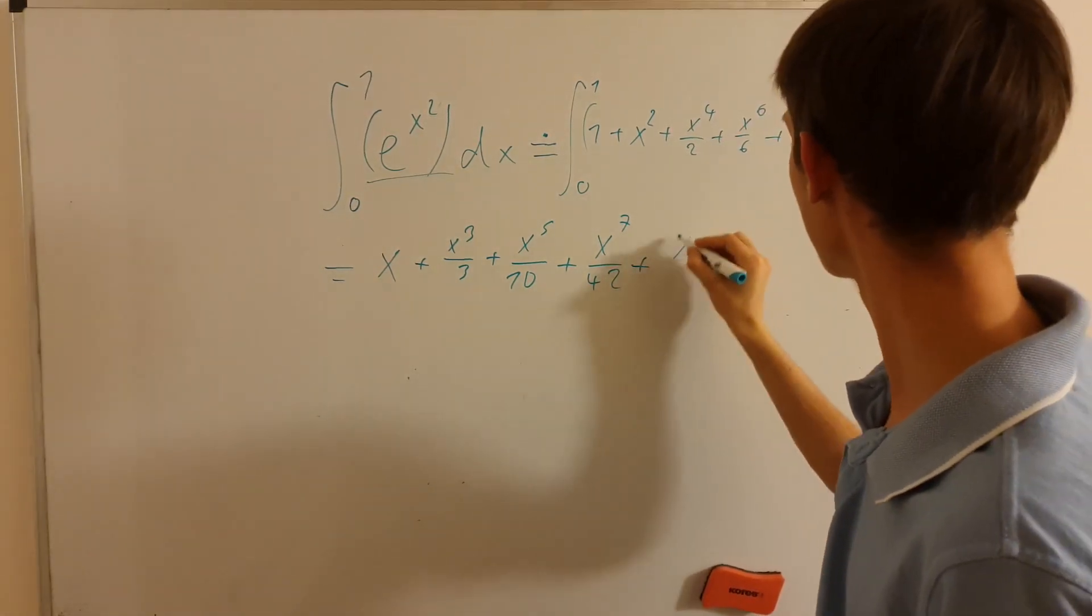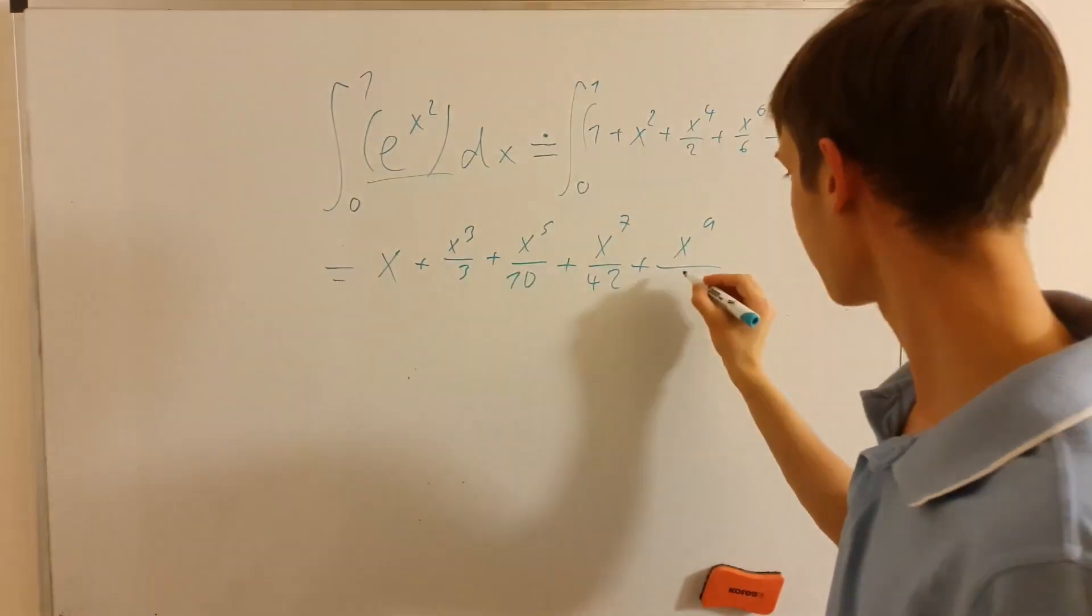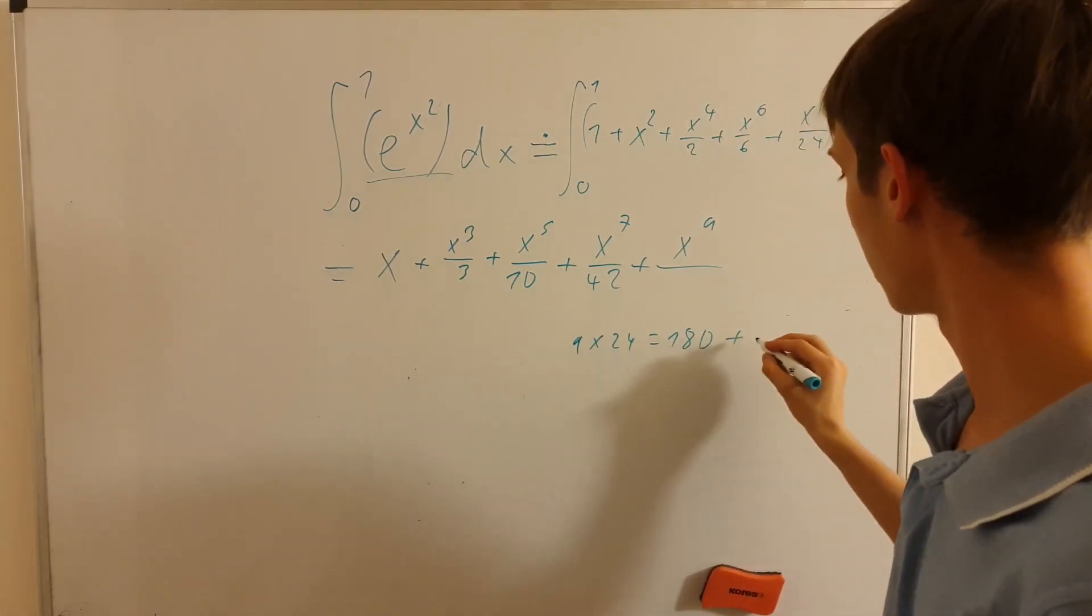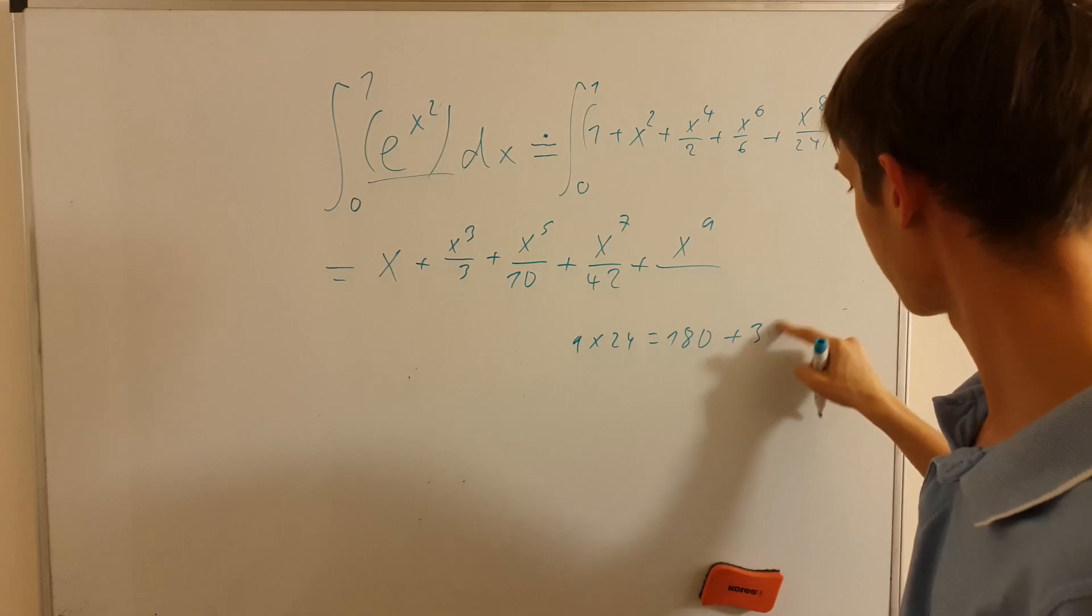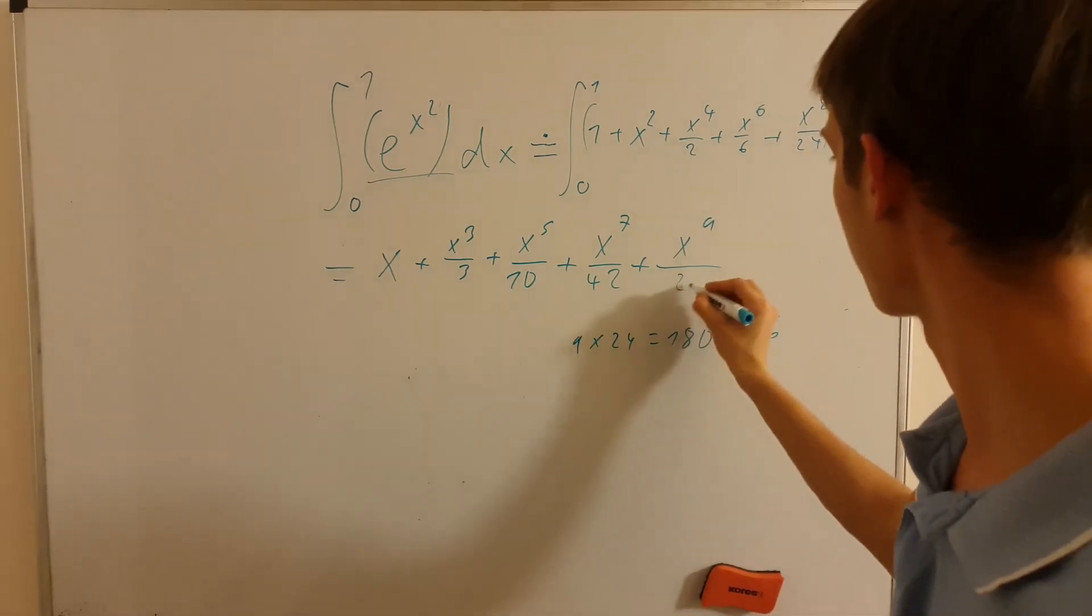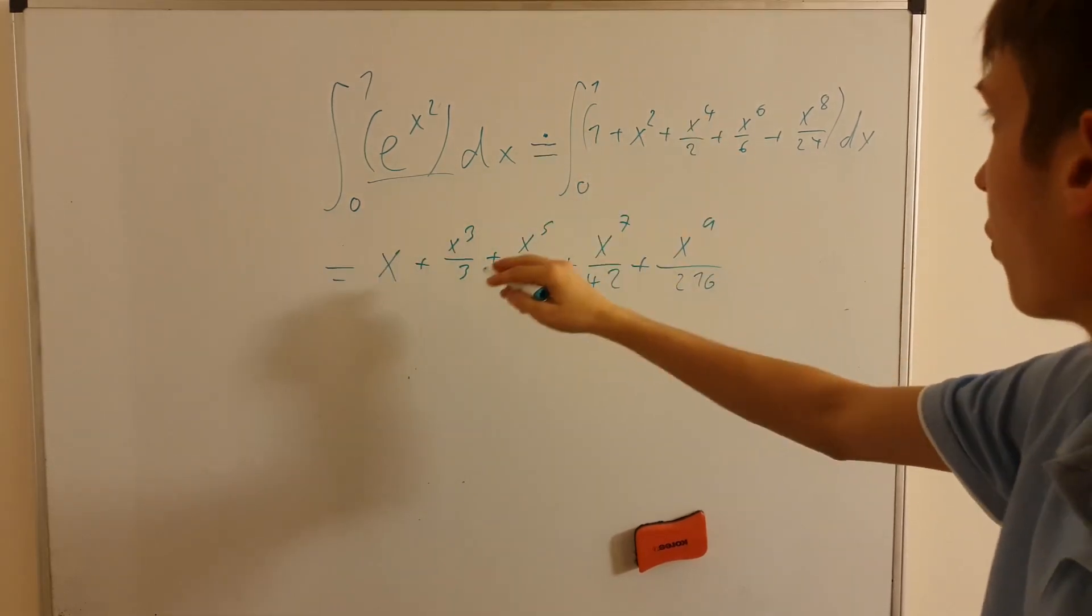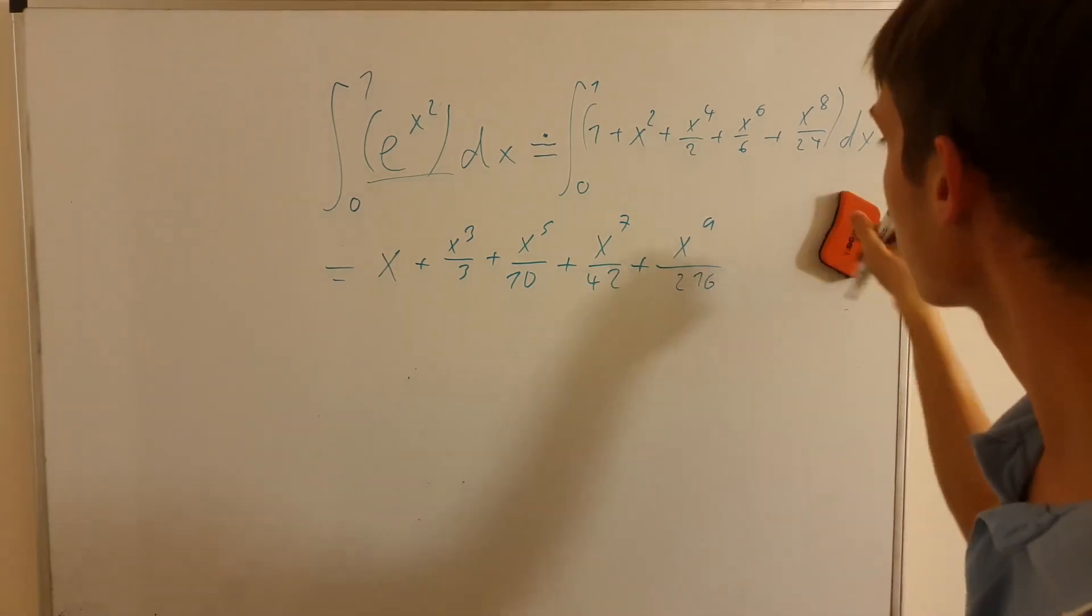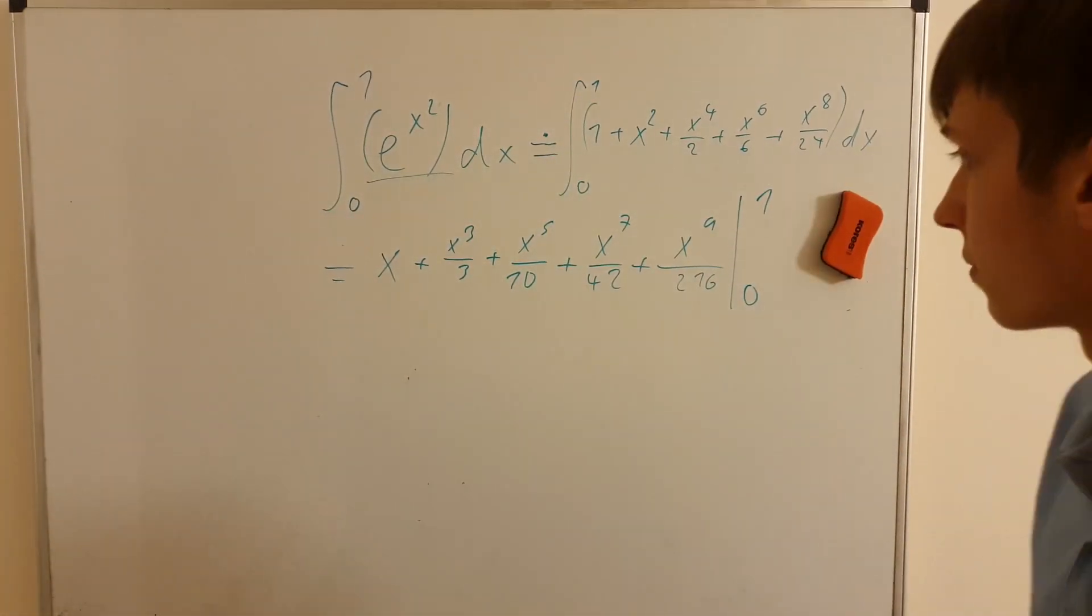Already now it shows that it won't necessarily be so nice to actually evaluate this even. So, 9 times 24 is 180 plus, 32, 36. Yeah. So, that will be over 216. All right. So, just to check, x plus x cubed over 3 plus x to the 5 over 10 plus x to the 7 over 42 plus x to the 9 over 216. Even this term will just add 1 over 216. When evaluated, this integral is from 1 to 0. From 0 to 1.